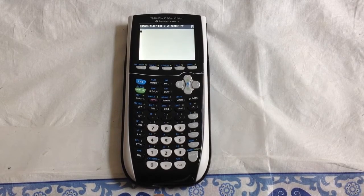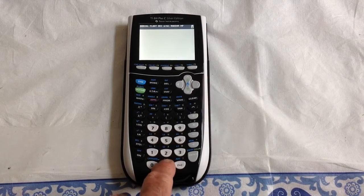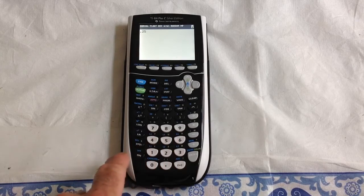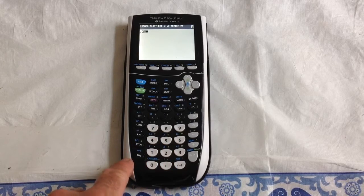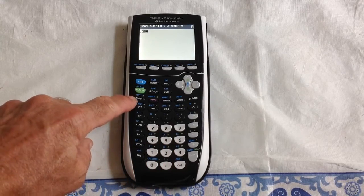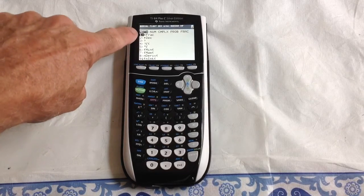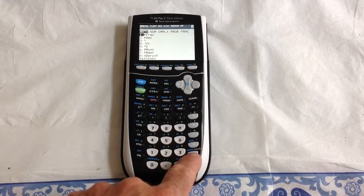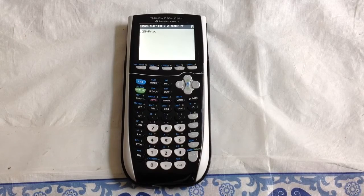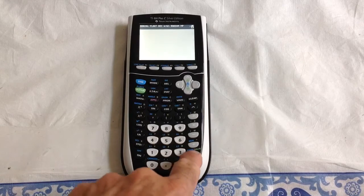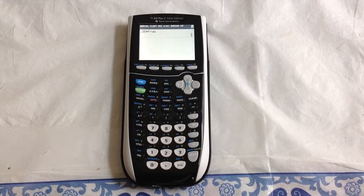To make a decimal into a fraction, for example 0.25, press the math key. The first entry there is fractions, so you press that and it tells the calculator to make that decimal into a fraction. Press enter and it'll make one-fourth.